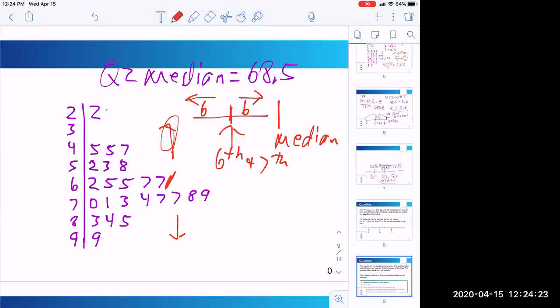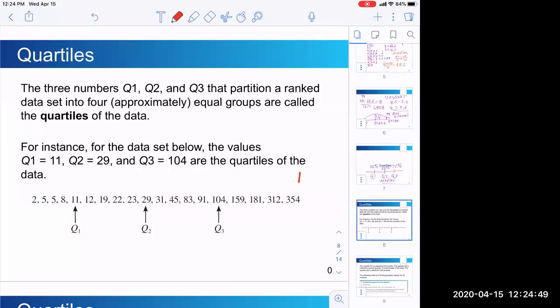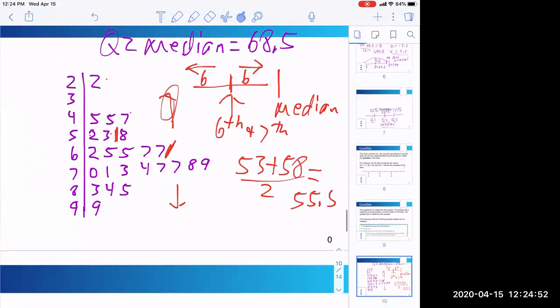So I go one, two, three, four, five, six. So my quartile one is midway between 53 and 58. So let's see 53 plus 58 divided by two. My quartile one is, let's see, 55.5.